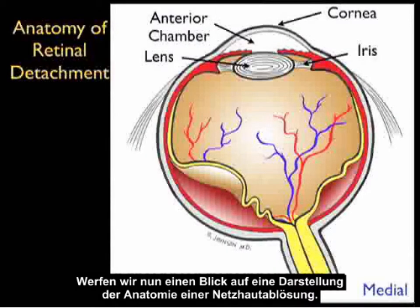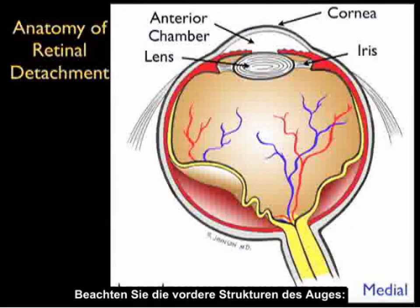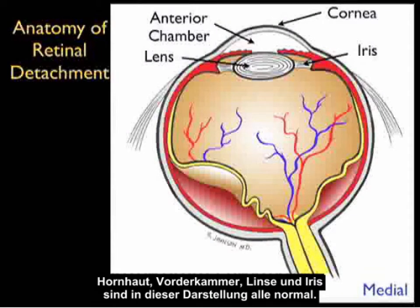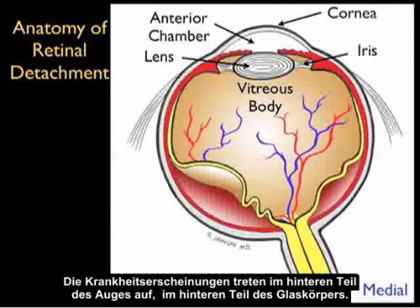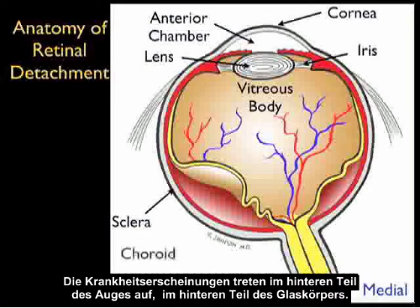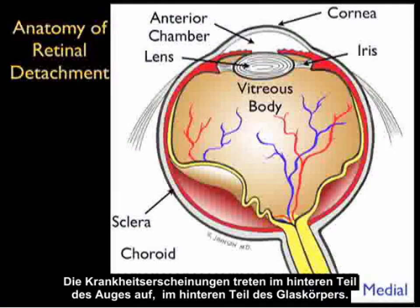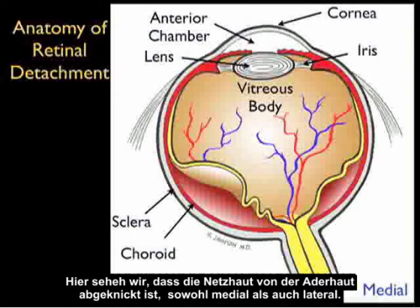Now let's take a look at an illustration showing the anatomy of a retinal detachment. We note the anterior structures of the eye — the cornea, anterior chamber, lens, and iris — are all normal in this illustration. The pathology exists in the posterior aspect of the eye, in the posterior part of the vitreous body.